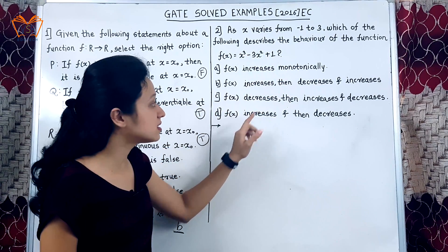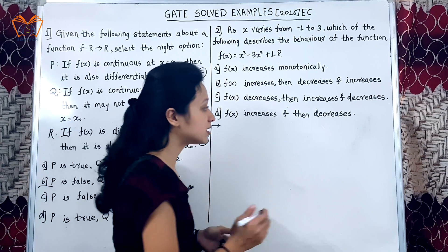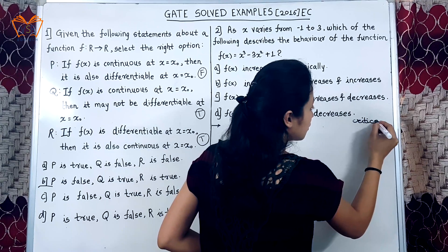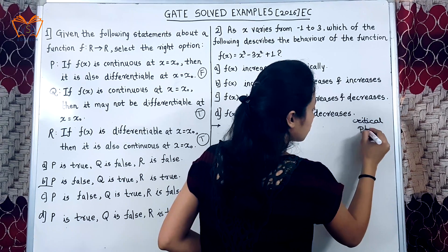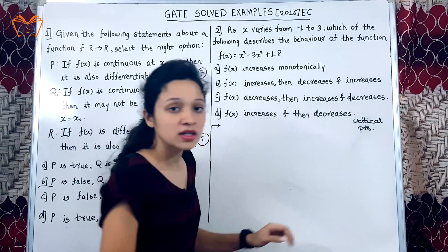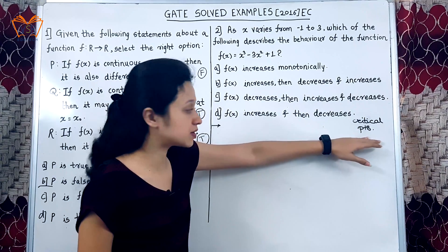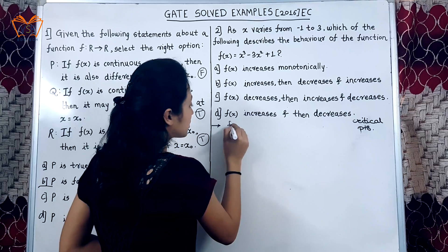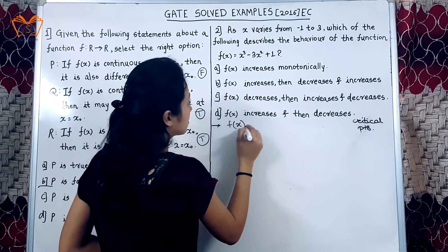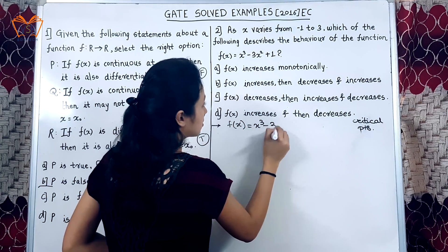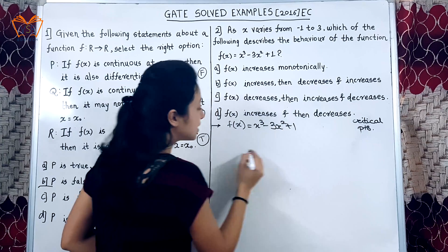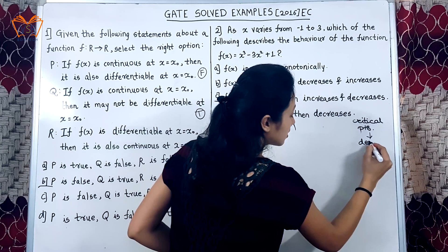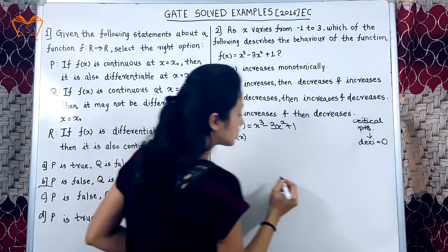We are supposed to find out the nature of function. Nature of function in the sense at which point the function is increasing or decreasing. We know that critical points are those points where the function changes its direction. So, first we will find out the critical points. For critical points we need to find the derivative. Because critical points occur when derivative is equal to 0.